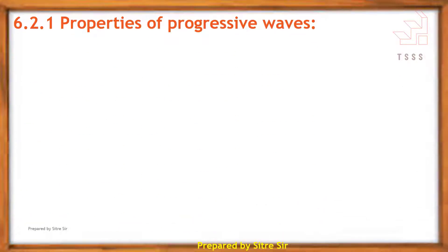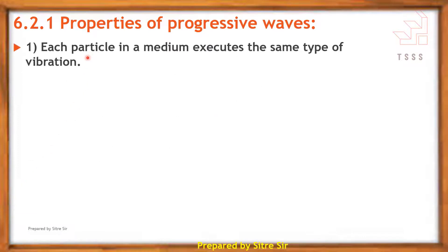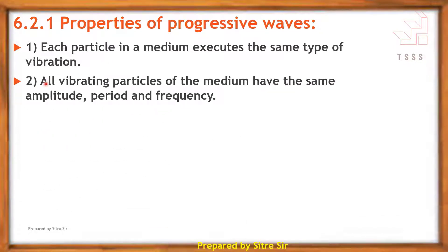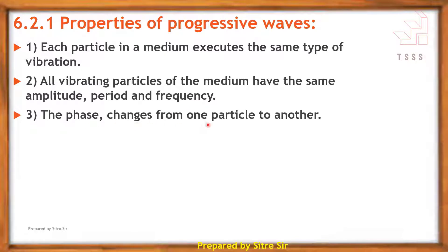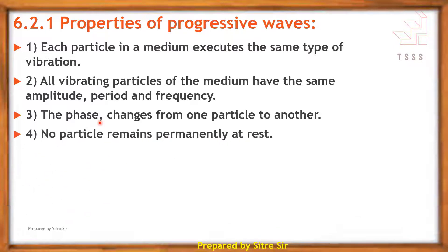Next are the properties of progressive waves. First property: each particle in the medium executes the same type of vibrations. All vibrating particles of the medium have the same amplitude, period, and frequency. The phase changes from one particle to another particle. No particles remain permanently at rest.